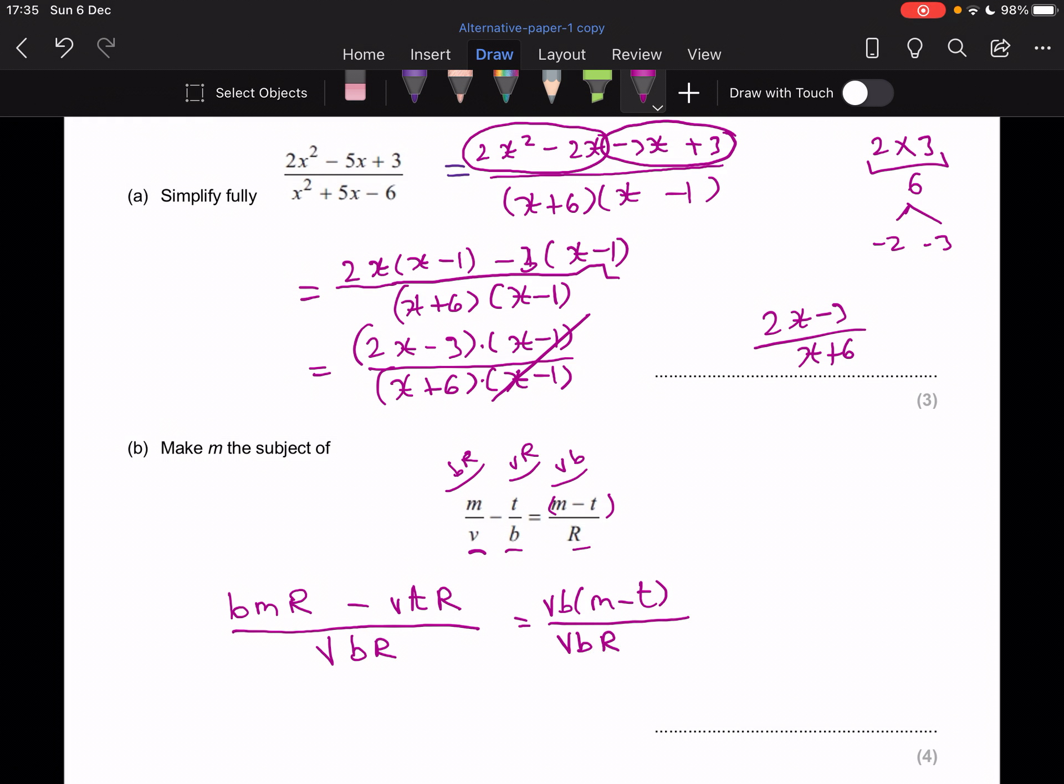Now you guys, you see that the denominators are the same. So if I multiply both sides by VBR, the denominators would cancel out. So that's what I'm going to do. You don't have to write this, but I'm just showing you what's happening.